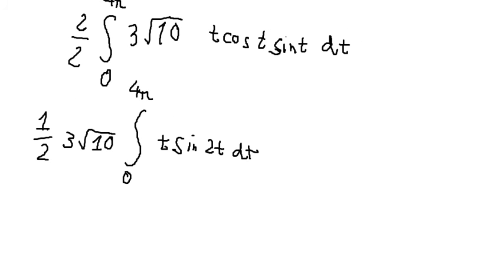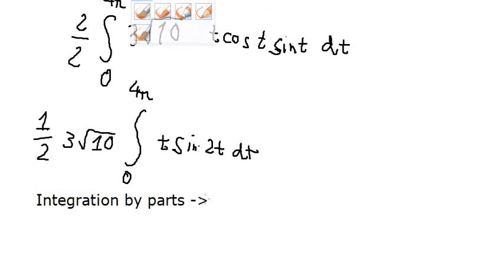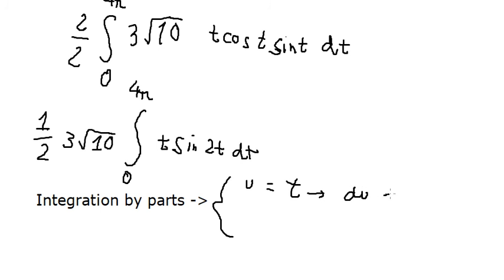Integration by parts. So we have u equals t, du equals dt, dv equals psi 2t dt.